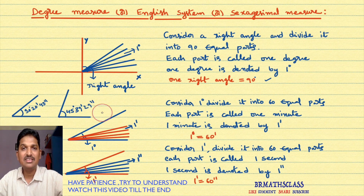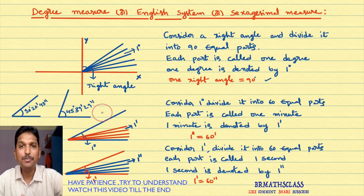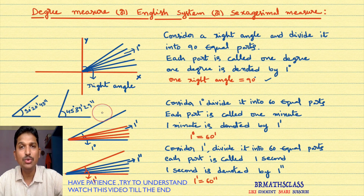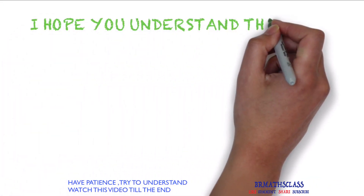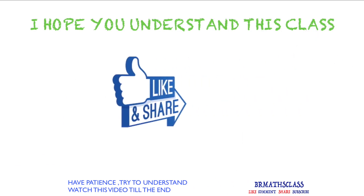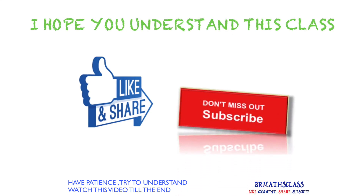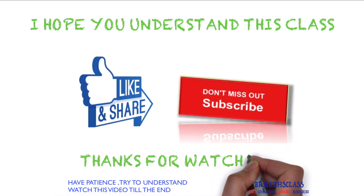In this class, what we learned is degree measure — how angle is measured in degrees. The main points: one right angle equals 90 degrees, one degree equals 60 minutes, one minute equals 60 seconds. These are very useful while doing exercise problems. In the next class, we will learn what is radian measure and how we measure angle in radians. I hope you understood this class. If you like this video, please share it with your friends, and if you are not yet subscribed to my YouTube channel, subscribe now. Thanks for watching. Have a great day. Bye bye.